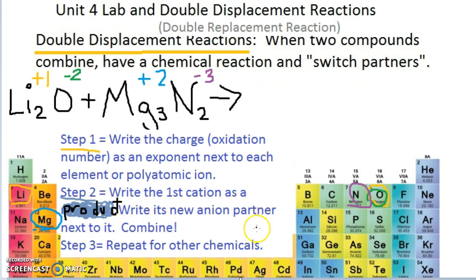So, write the first cation as a product. Cation means what? Cations are positive. And anions are negative. So, let's take the first cation, which would be lithium. And lithium has a positive one charge. And it is going to switch partners. Lithium is no longer going to be with oxygen because a chemical reaction happened. These are getting mixed up. So, instead of lithium being with oxygen, is lithium going to be with magnesium or with nitrogen? Lithium will be with nitrogen. Why? Because in order to be attracted, you need a positive and a negative.